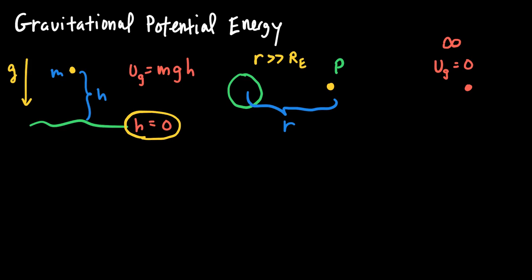When we're close to the surface of the earth, we can choose where h equals zero, but further away, we define gravitational potential energy as zero at infinite distance. The further I move away from the planet, the gravitational potential energy should be increasing. So as r increases, we expect gravitational potential energy to increase. Since it's defined as zero at infinity, as I move closer to the planet, the gravitational potential energy should be negative — becoming less negative and increasing as r increases.